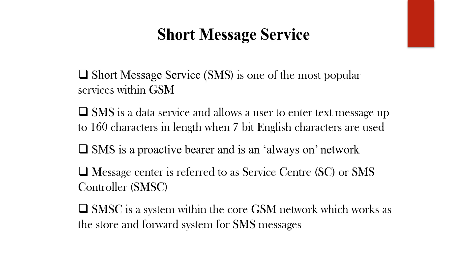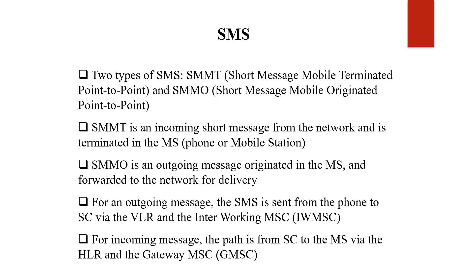SMS has two types: SMMT and SMMO — that is Short Message Mobile Terminated point-to-point and Short Message Mobile Originated point-to-point. SMMT is an incoming short message from the network that is terminated at the mobile station — meaning messages coming from another phone to your mobile station. This incoming messaging system works from one phone or station to a mobile station.